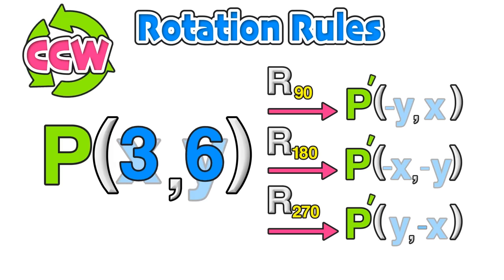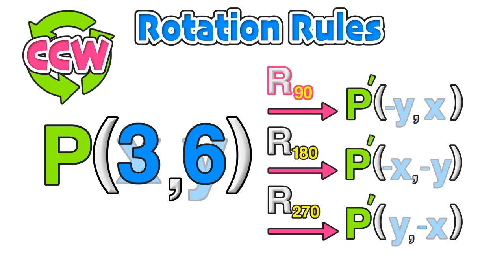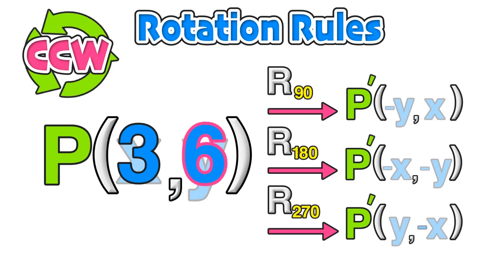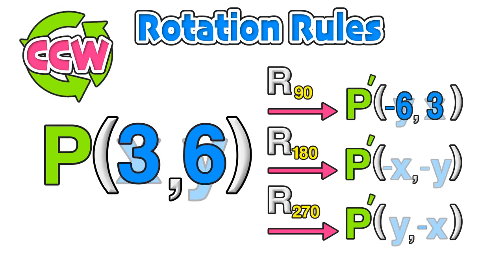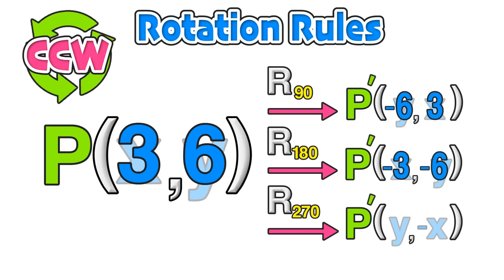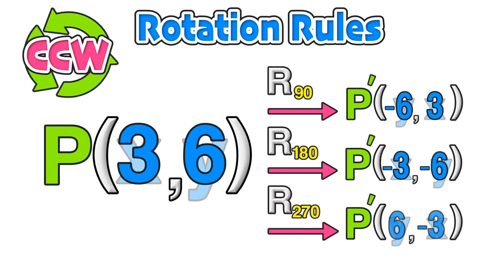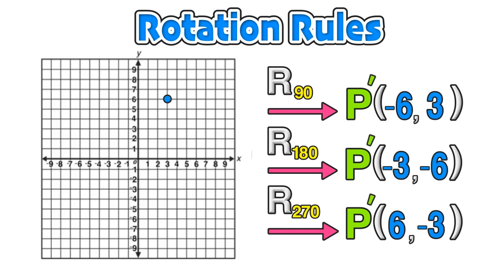If we apply the point (3, 6) from the last example using these rules: for a 90-degree rotation, we start with the y-coordinate negated, so 6 becomes negative 6 — that's the new x-coordinate — and the y-coordinate is the old x-coordinate, staying as positive 3. We can repeat this process for the 180-degree and 270-degree rotations. These points correspond directly with the points we found using the visual method.